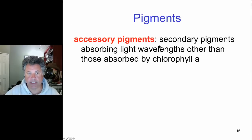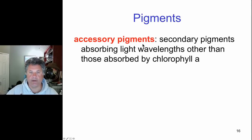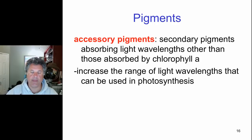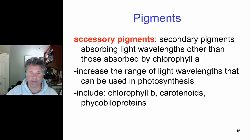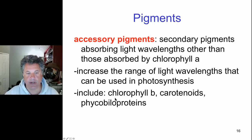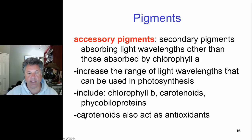Before doing that, let's look at some accessory pigments. In addition to chlorophyll, which we've just gone over, there are secondary pigments that can absorb wavelengths of light other than chlorophyll A, and that increases the wavelengths of light that can be used in photosynthesis. The accessory pigments found in photosystems are chlorophyll B, carotenoids, and phycobiliproteins. The carotenoids also act as antioxidants.